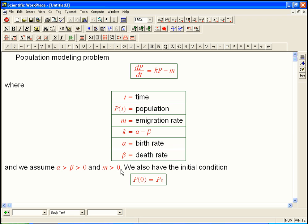And that's m greater than zero assures that this actually is something that decreases the dP/dt, the population growth rate, and that's going to be a minus m. The other conditions, alpha is assumed to be greater than beta, so that if you didn't have emigration, k would be positive, and you'd actually have population growth and not decay.